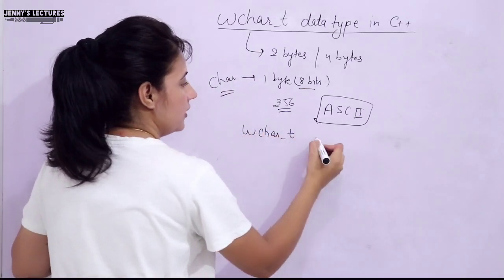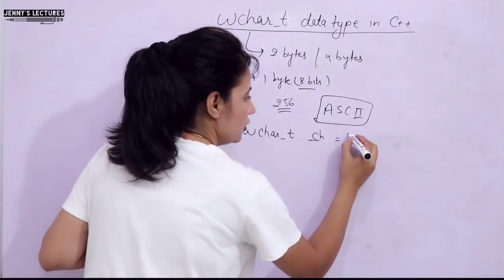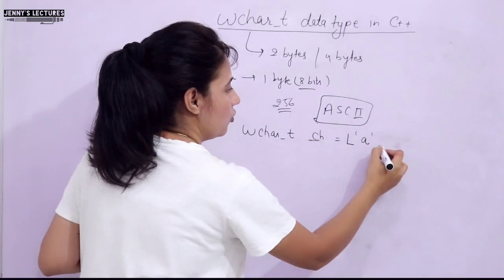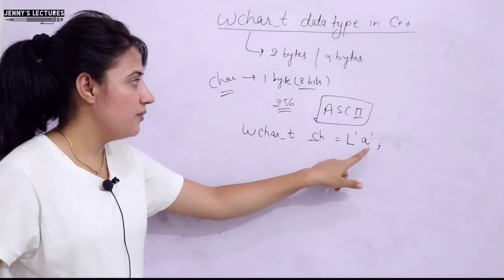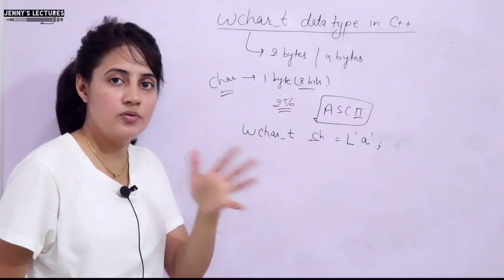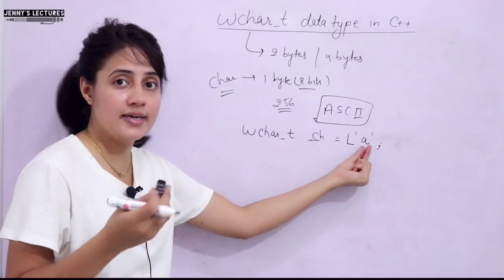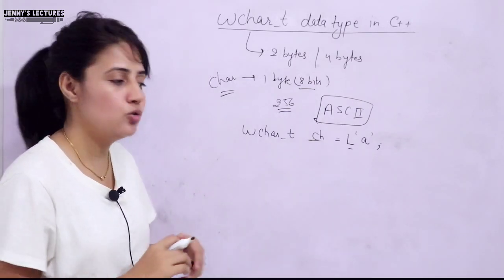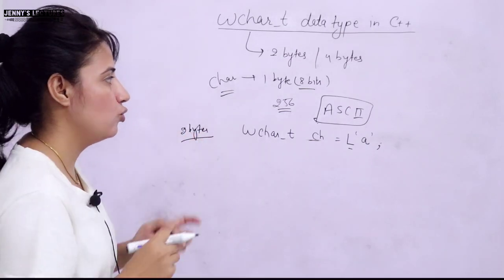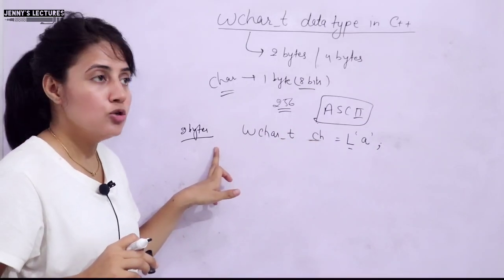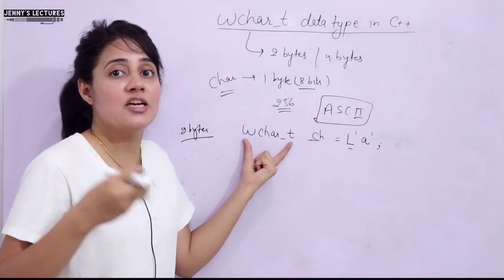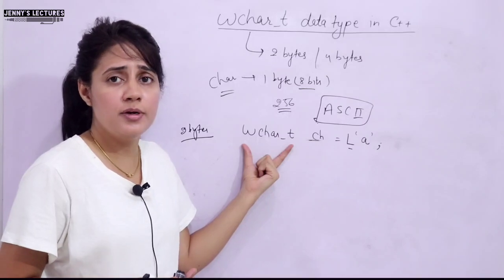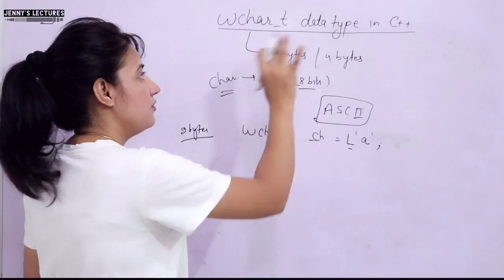That is why we use the wide character data type. The syntax is: wchar_t followed by the variable name. The prefix used for literals is 'L', then in single quotes you write the character — for example, L'a'. This L tells the compiler it is a wide character taking two or four bytes. wchar_t is mainly used when dealing with international languages like Russian or Japanese, which have many different characters and symbols that cannot be represented using the char data type.